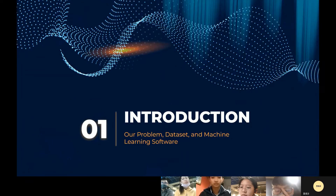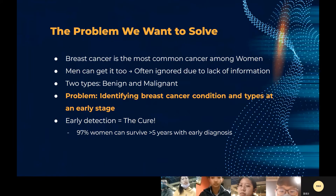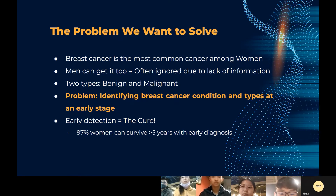The first topic in our introduction is the problem we want to solve. Breast cancer is the most common cancer among women. Breast cancer is an uncontrolled growth of breast cells — cells that gain the ability to keep dividing without control or order, producing more cells and forming a tumor. Men can also get breast cancer, but it is often ignored due to lack of information.